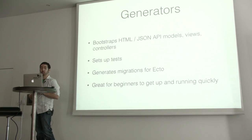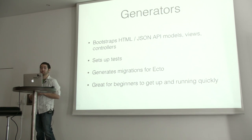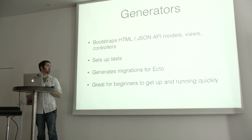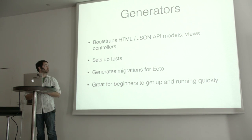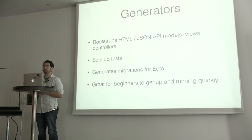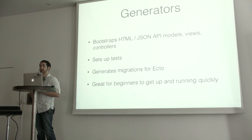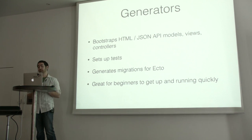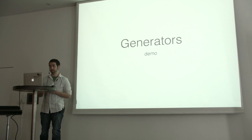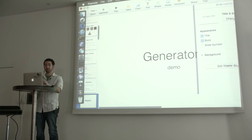Generators are a huge addition. I resisted them at first, but I think they're a huge thing for onboarding newcomers and teaching them the ways of Phoenix. They bootstrap your HTML or JSON API — models, views, controllers, templates — set up some tests for you, and generate Ecto migrations. It's great for beginners to get up and running quickly. If you're using Phoenix professionally, you're not necessarily going to use generators for everything, but to get started it's really important.